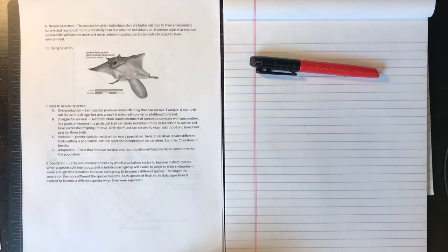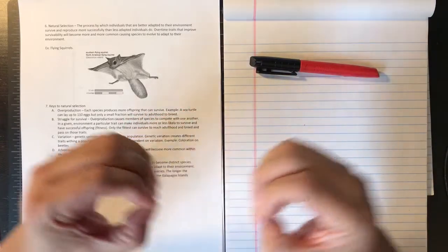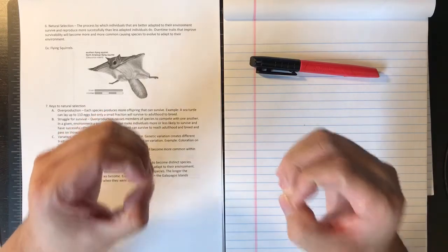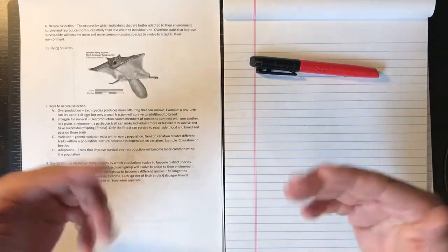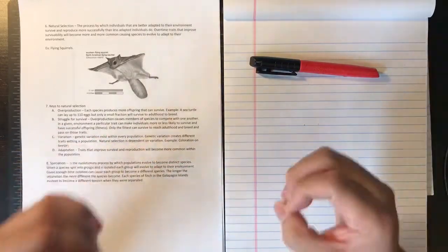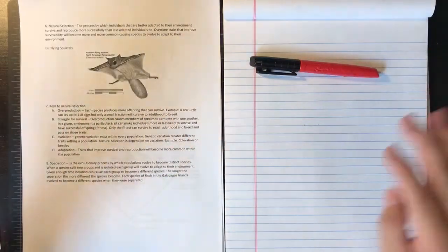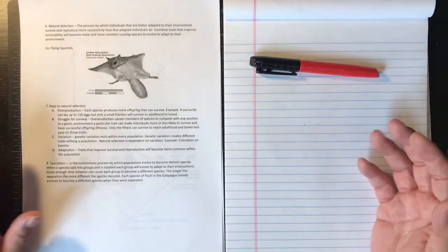Finally, speciation. Speciation is the evolutionary process by which populations evolve to become distinct species. What do I mean by that? Well, over time if a species breaks up into two groups, if these two groups were to be isolated and they can't interbreed, over time they will adapt to their environment and they will become different species. The longer the separation, the more different the species becomes.